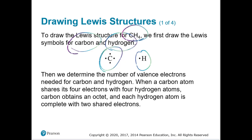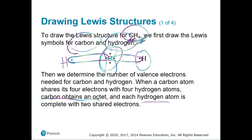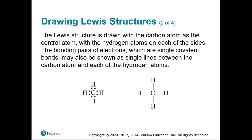We're told there are four hydrogen atoms and one carbon. Each hydrogen would love to share an electron with one of carbon's valence electrons. So one hydrogen shares with one side of carbon, and three others each share with the remaining three sides. When we're done, carbon obtains an octet, and each hydrogen is complete with two shared electrons.